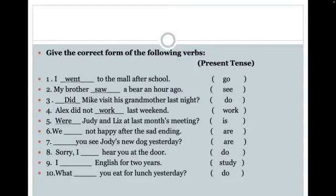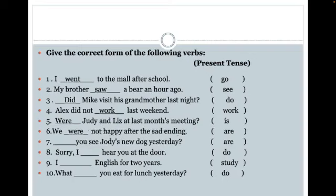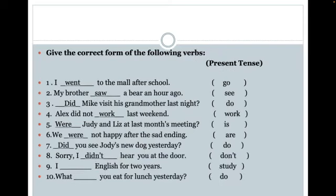Sentence number six: 'We are not happy after the sad ending.' That sounds correct, except now this has the word 'after' — remember, before and after tell us we're in the past. So we need to change it to past tense: 'We were not happy after the sad ending.' Number seven: 'Are you see Jody's new dog yesterday?' The word 'yesterday' tells us we're in the past, so we change to 'did.' And 'Sorry, I didn't hear you at the door' — using the irregular 'did not' contracted to 'didn't.'